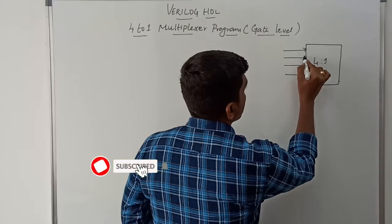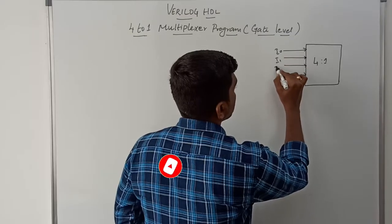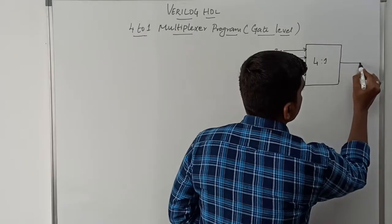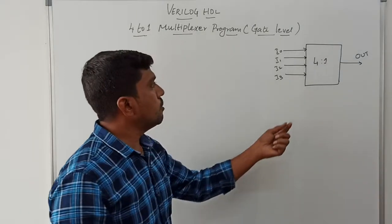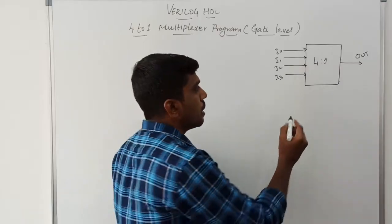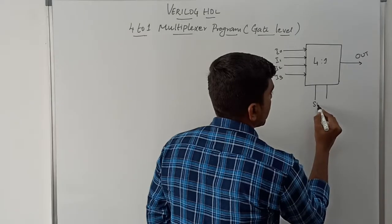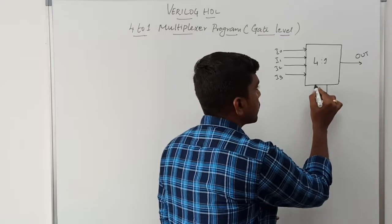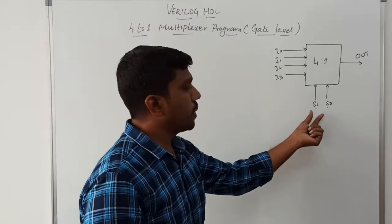The 4 input lines are named I0, I1, I2, and I3. The output line is called 'out'. Generally, the 4-to-1 MUX has 4 inputs and allows only 1 output based on the selection lines, which are named S1 and S0. With only 2 selection lines, there are 4 possible combinations.